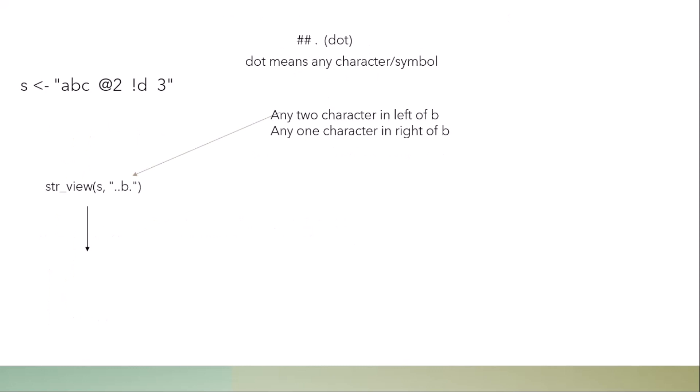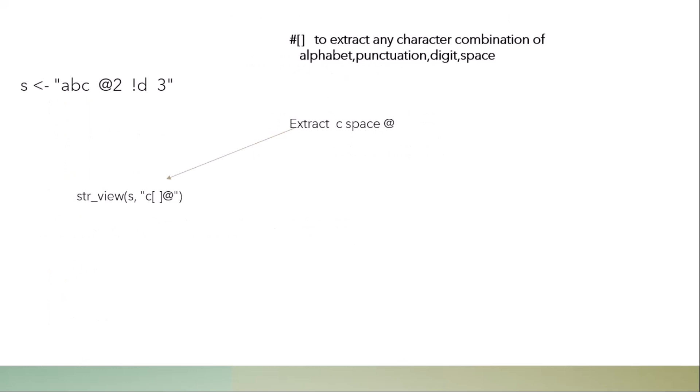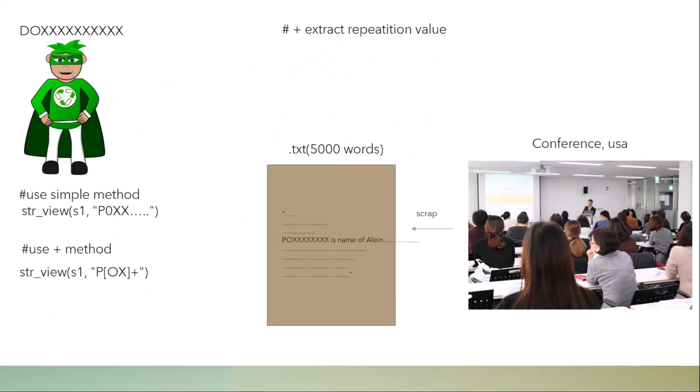If I write dot dot B dot, it means: any two characters to the left of B, and one character to the right. Running this returns NA, because in the string there is only one character to the left of B, not two. Now, close bracket is used when you want to extract any combination of characters including alphabets, punctuation, digits, and spaces. For example, to extract C, space, and the at-sign, you just write those inside brackets and you get the result.